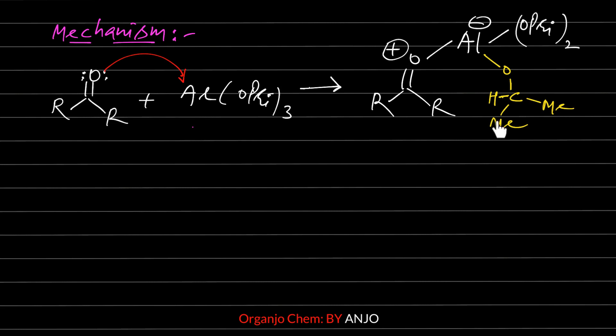In the next step, the carbon-oxygen bond acts as the electron donor. As the carbon-oxygen bond breaks, it forms a carbon-oxygen interaction. When the electron pair is transferred, the oxygen-aluminum bond breaks, and a cyclic transition state is formed.